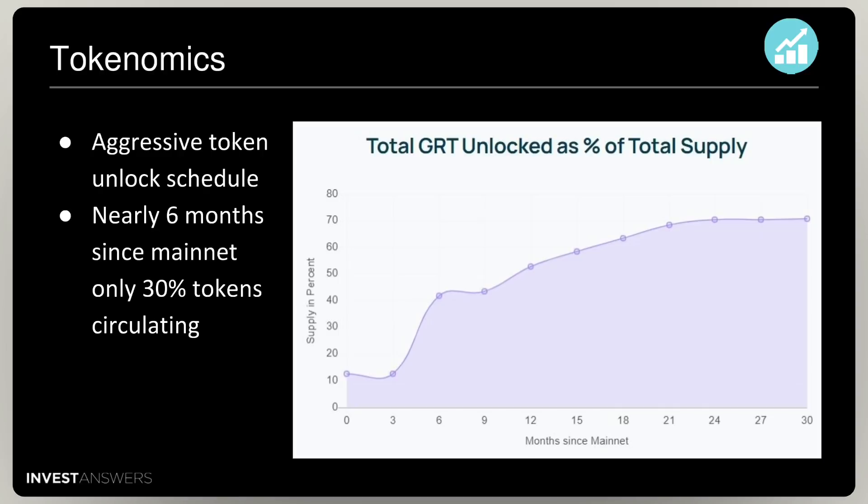GRT will have immense sell pressure over the next three years as token unlocks are slowly released. The inflation is, in some cases, over 800,000 tokens a day. This will put immense sell pressure and outpace buy pressure. And the query burn fees will never be greater than or equal to the inflation and rewards distributed. I believe this has the crappiest tokenomics because there is no room for price appreciation.